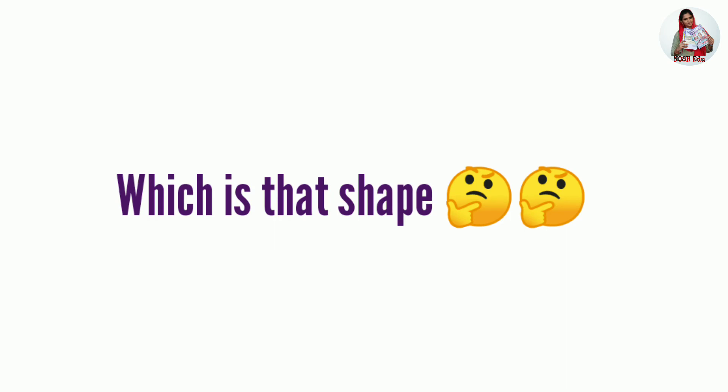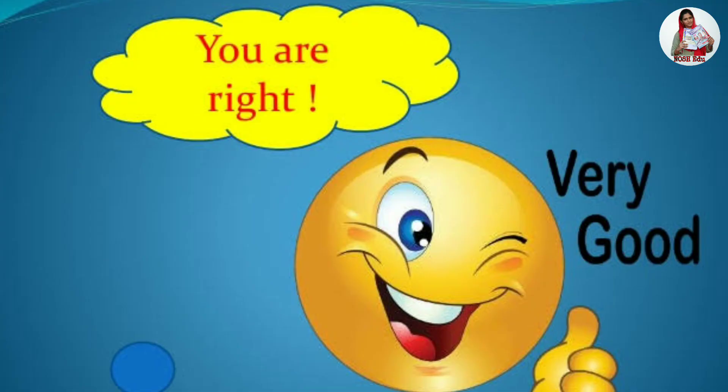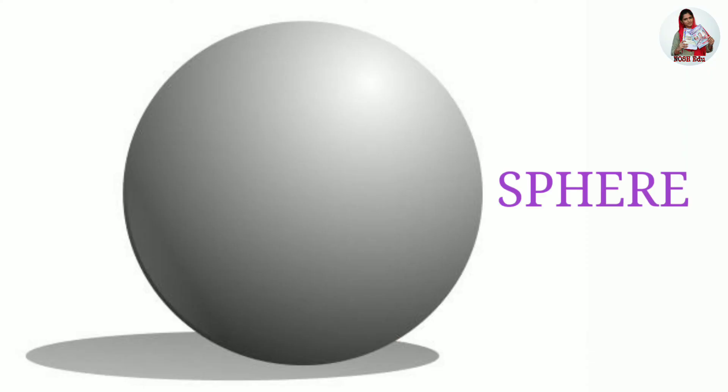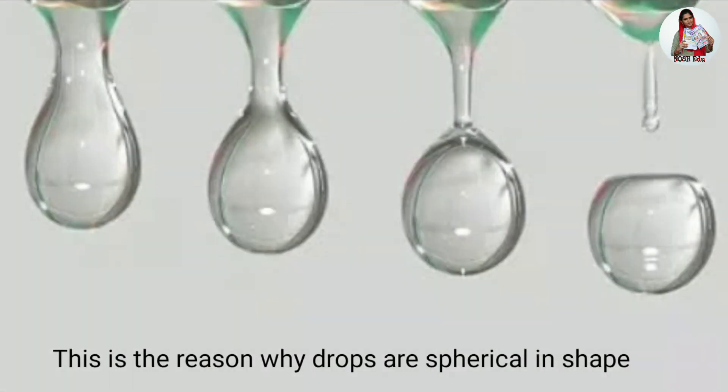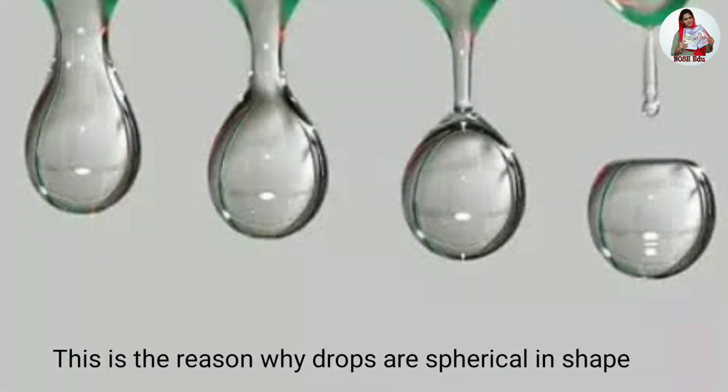Which is that shape which has minimum surface area? Do you know? Yes, you are right. It is sphere. Sphere has minimum surface area. This is the reason why drops are spherical in shape.